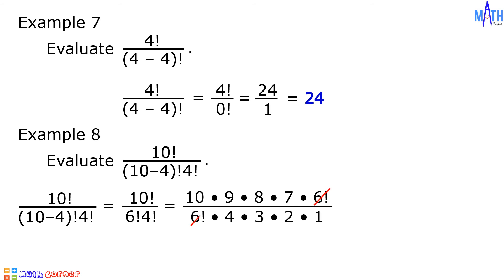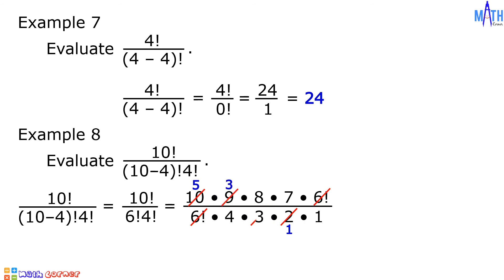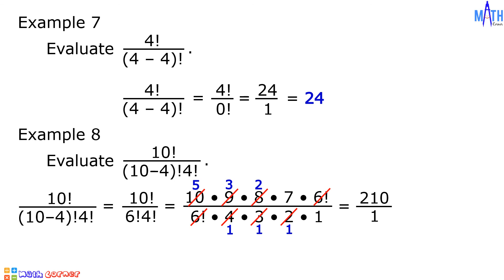Cancel out 6 factorial. Then, 10 and 2 share a common factor of 2: 10 divided by 2 is 5, and 2 divided by 2 is 1. Next, 9 and 3 share a common factor of 3: 9 divided by 3 is 3, and 3 divided by 3 is 1. Then, 8 and 4 share a common factor of 4: 8 divided by 4 is 2, and 4 divided by 4 is 1. Multiplying the remaining factors in the numerator gives 5 times 3 times 2 times 7, which equals 210. The denominator is 1 times 1 times 1 times 1, equal to 1. Therefore, 210 divided by 1 is equal to 210.